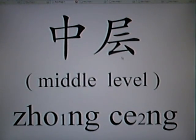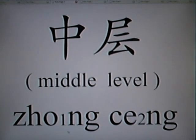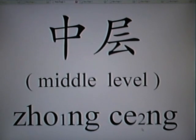中程 (zhōng chéng) — middle level. 中, 中程, 中程.